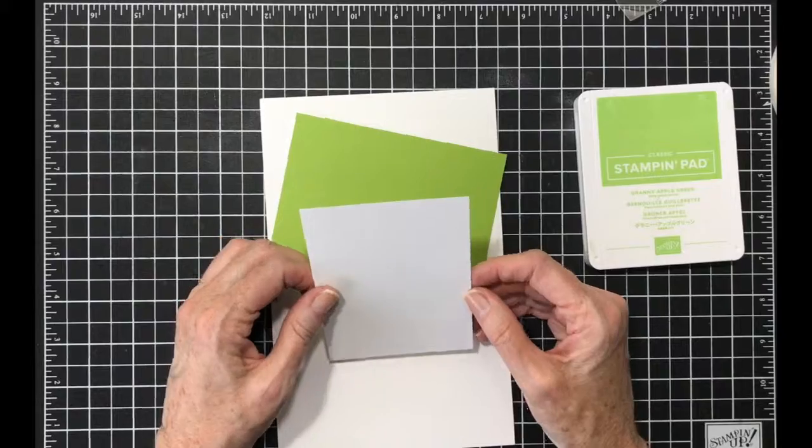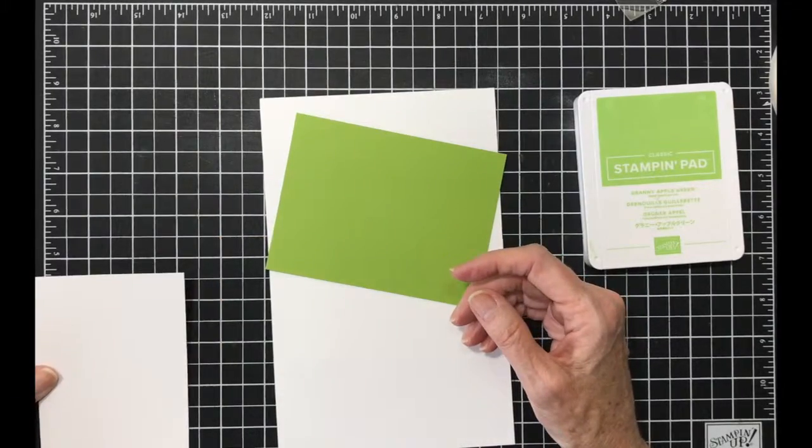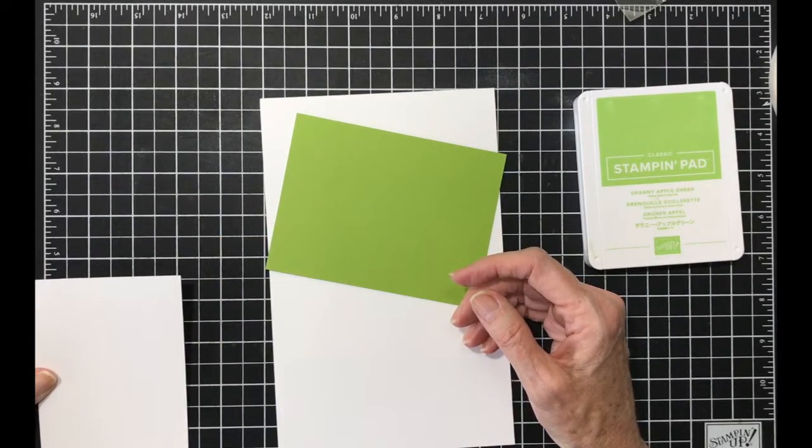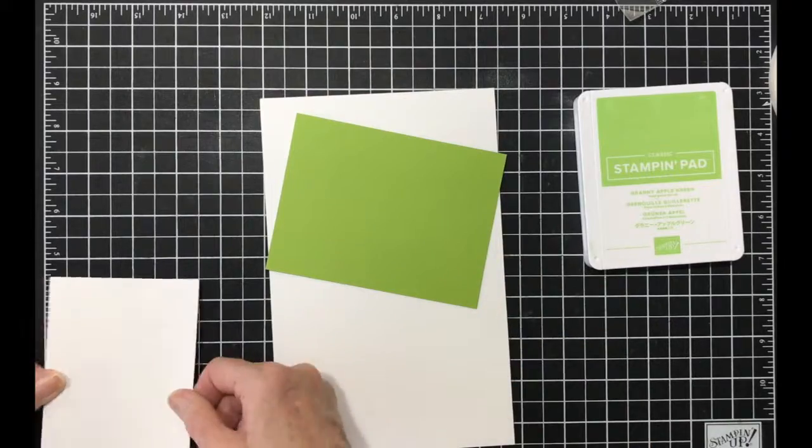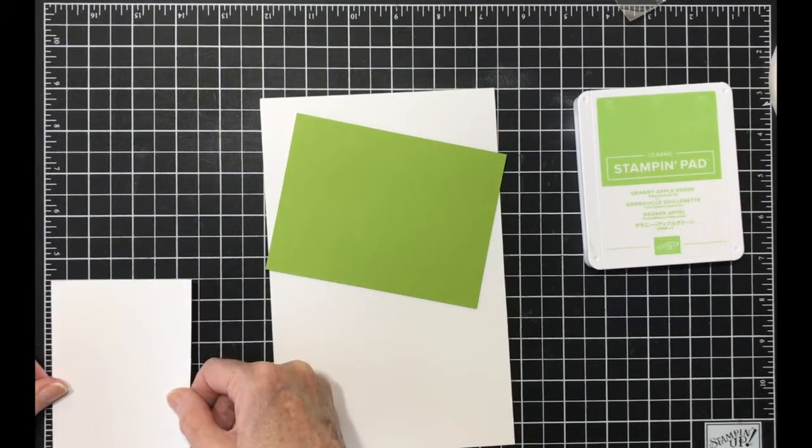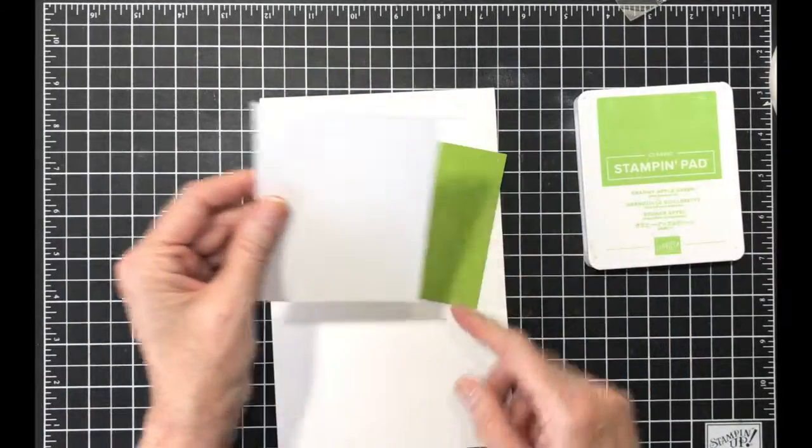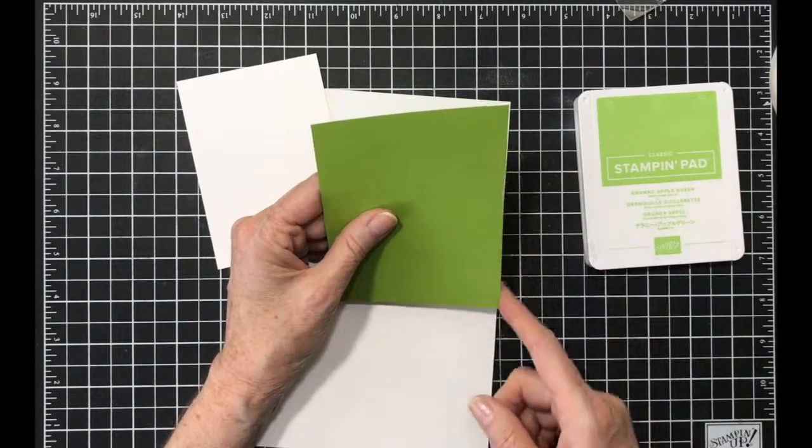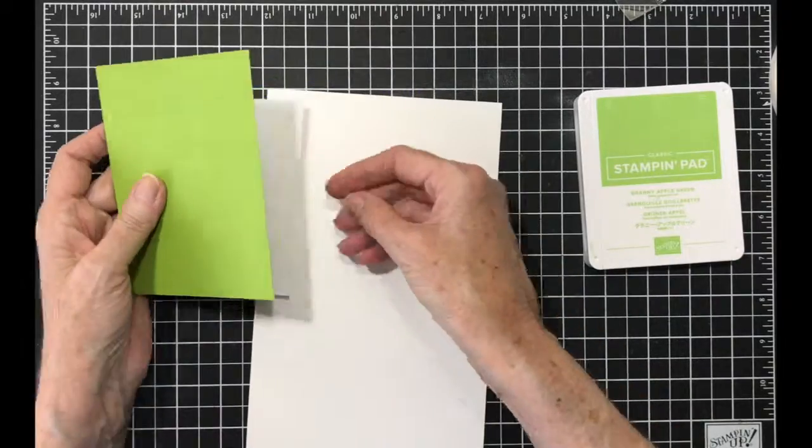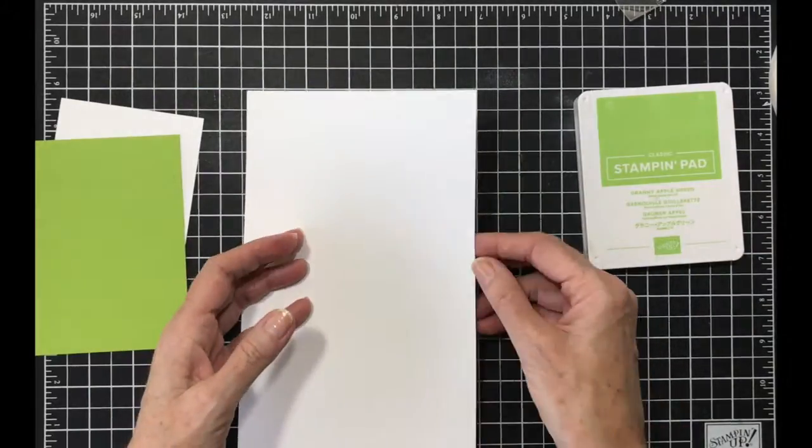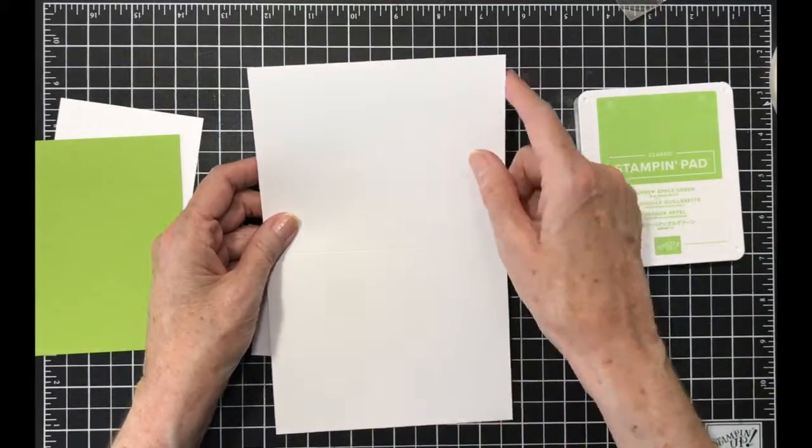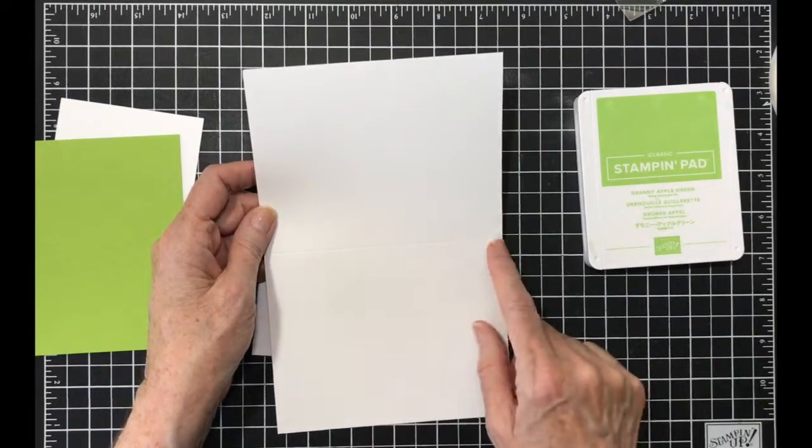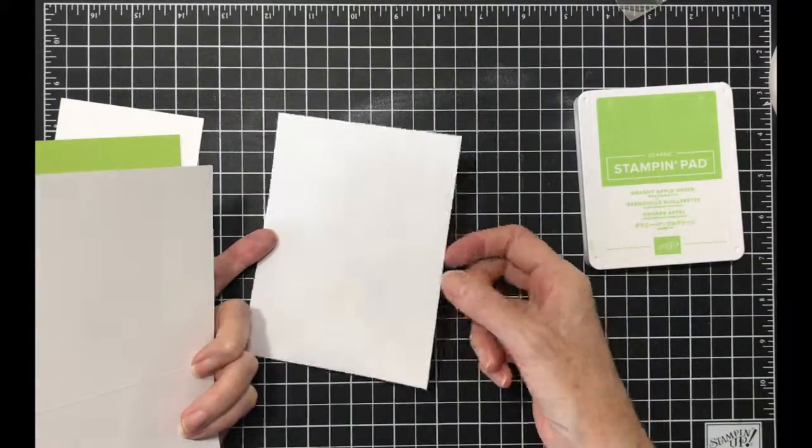I have to use Granny Apple Green ink. I have a piece of whisper white, and this one is cut three and a fourth by four and a half, and this one is three and three-fourths by five. Then I have my card base which is five and a half by eight and a half, scored at four and a fourth, and my envelope.